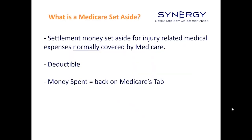What is a Medicare set-aside? Fundamentally, it's exactly what it sounds like — money set aside from the settlement. If you settle a case with a $5,000 Medicare set-aside, that functions a lot like a deductible. It's a good-faith estimate of what future medicals will be that are covered by Medicare and related to the accident. Once that $5,000 is spent down appropriately, Medicare is back on the hook in theory.